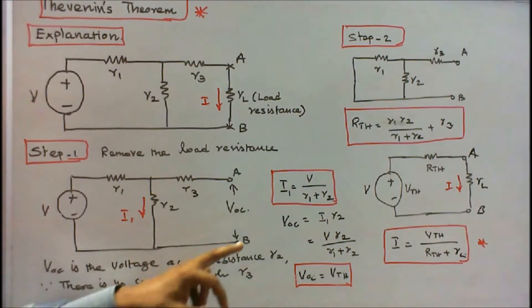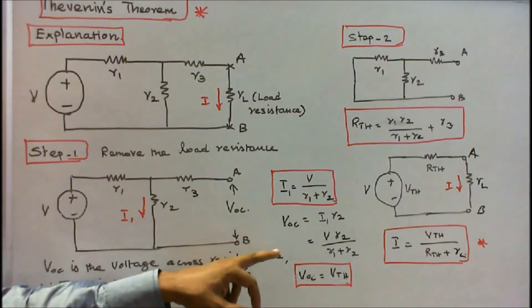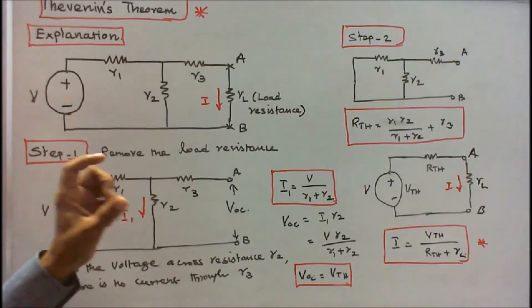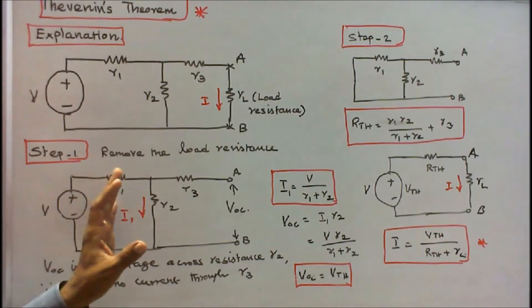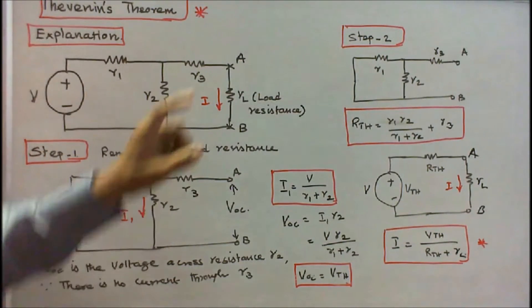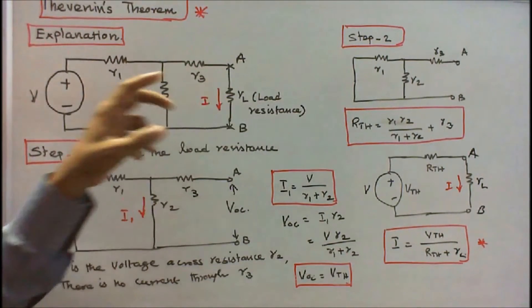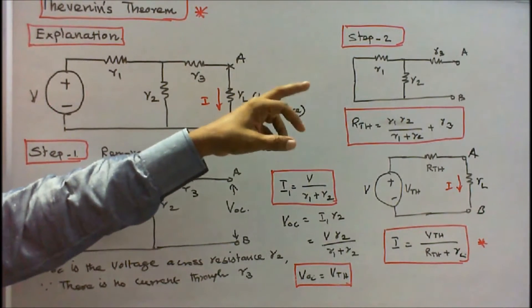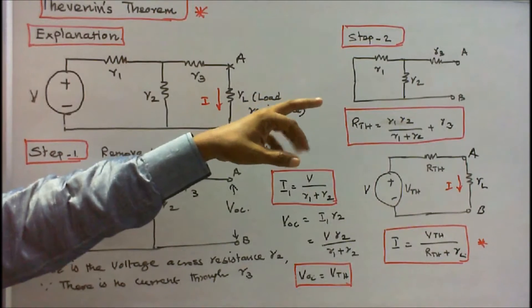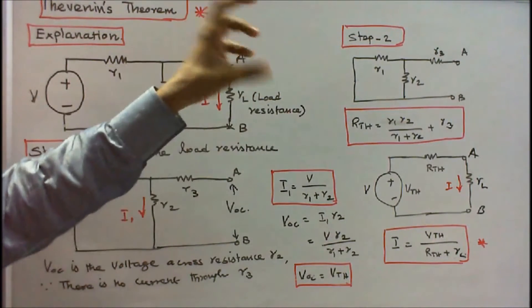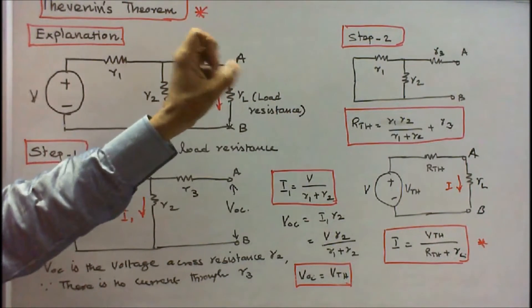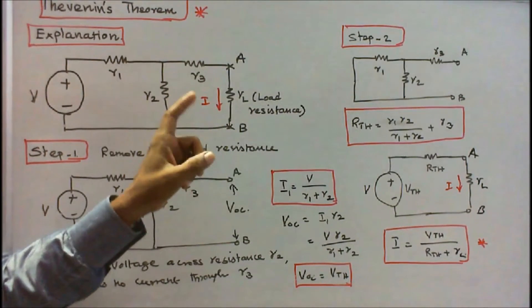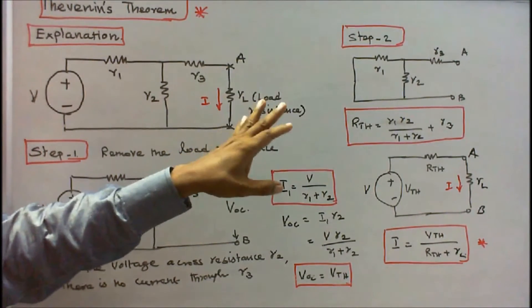Since I know I1, VOC equals I1 times R2, which gives VOC equals V times R2 divided by R1 plus R2. That open-circuit voltage is called Thevenin's voltage — that is step one. For step two, I short the voltage source. Therefore R1 and R2 are in parallel, and the total Thevenin's resistance equals R1 times R2 divided by R1 plus R2, plus R3.